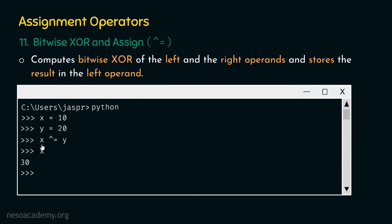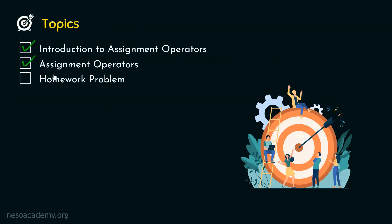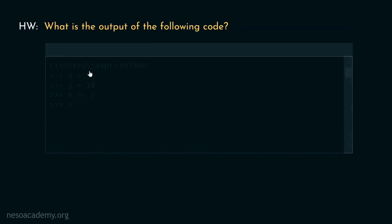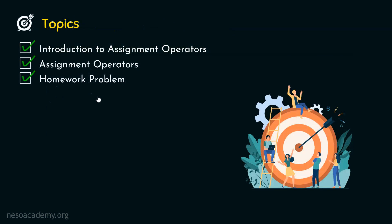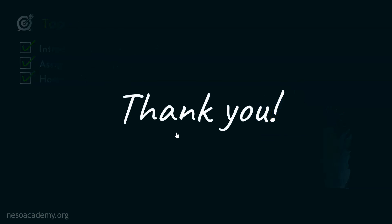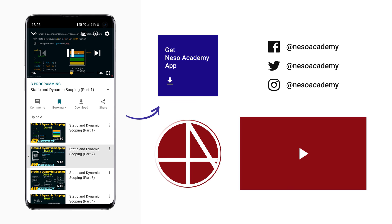I hope the concept is completely clear on how these assignment operators work. The rest of the assignment operators not discussed in this presentation work the same way. Now we will see the homework problem: what is the output of the following code? Your job is to find the answer and post it in the comment section below. We have understood what an assignment operator is and discussed some in detail, along with the homework problem. This means we are done with this lecture. Thank you for watching this presentation — I will see you in the next one.